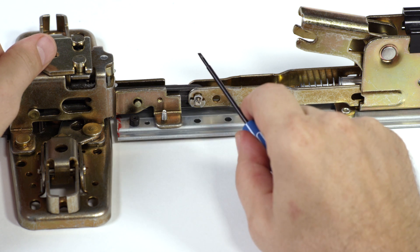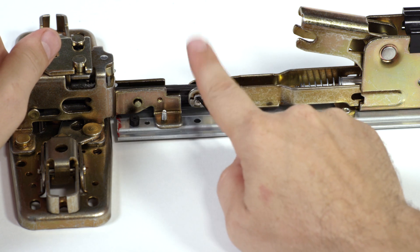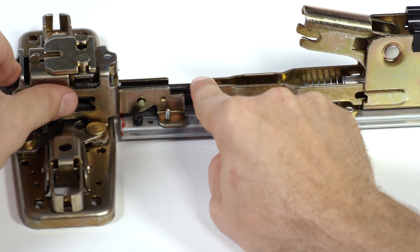Insert a small flat screwdriver to the top of the ring, lift it up and remove it, then push out the connecting pin.